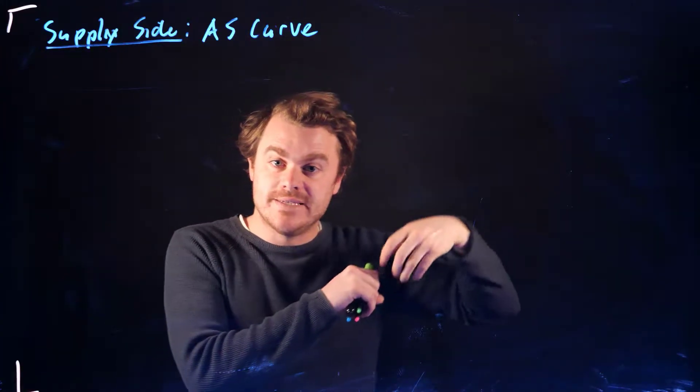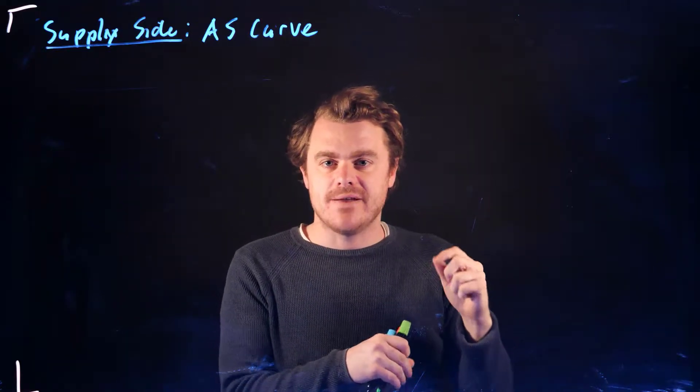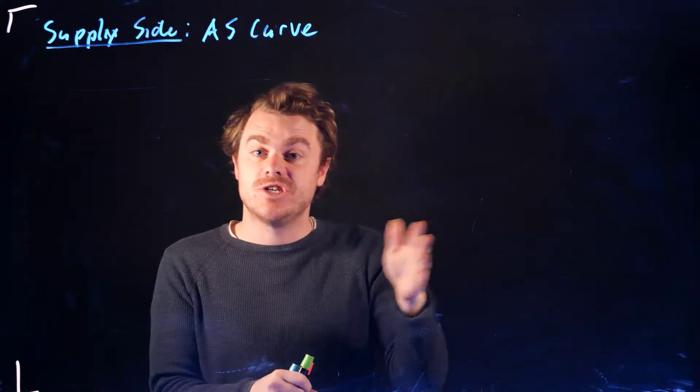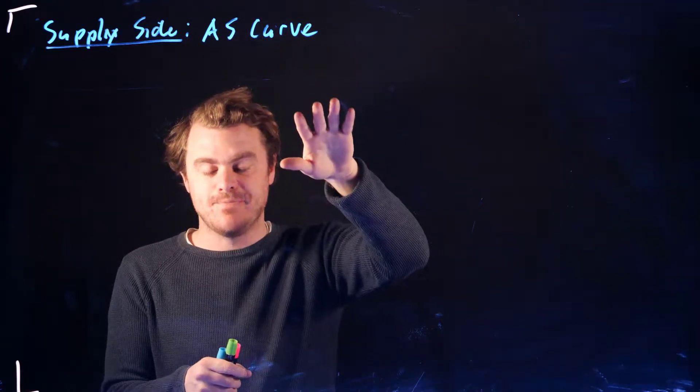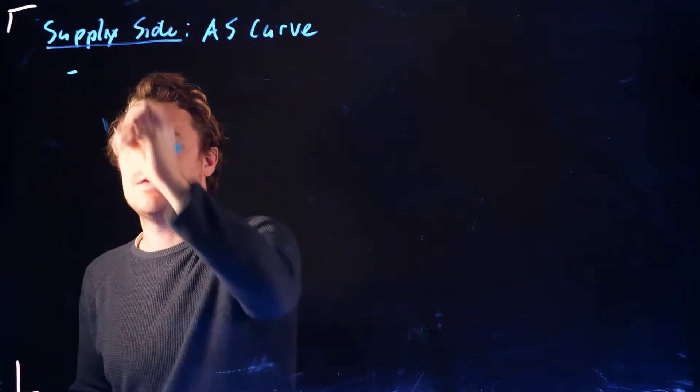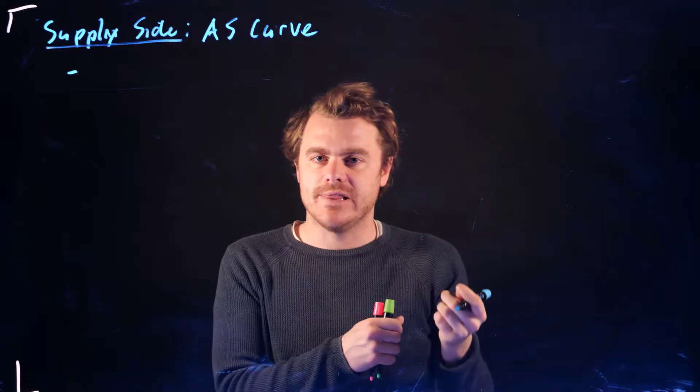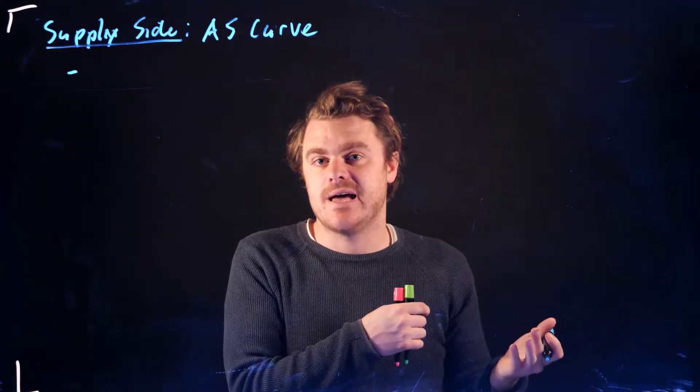So now we hopefully have an idea of how the demand side of the economy is working, how we derive this aggregate demand function as well as what causes these shifts in the AD curve. Now we can move to the supply side and the AS curve. What I mean by AS curve is the aggregate supply curve, and the aggregate supply curve is just going to relate the price level to the quantity that firms are willing to sell at that price level.